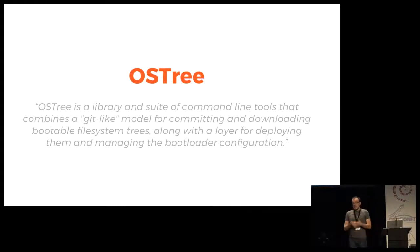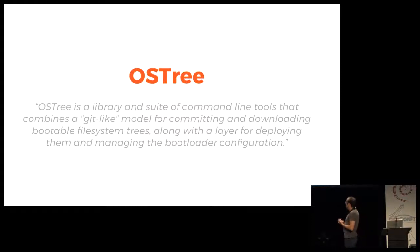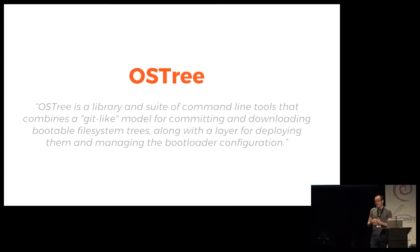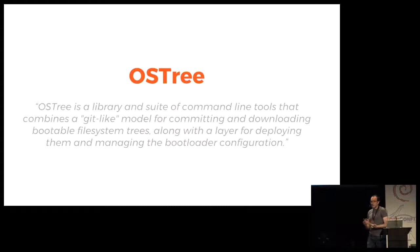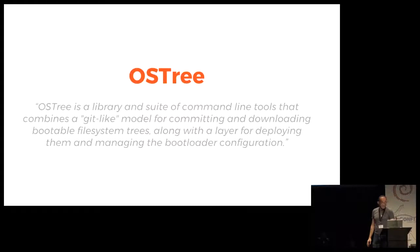What we chose instead is OSTree. It's effectively a Git-like model for binaries — I think that's the easiest way to describe it. You take a whole filesystem tree, big binary blobs, and you commit it to a repository. A repository can have many branches, many remotes, and things like that. Then you download those bits again on the client side, and this happens atomically — not a chance that it's partly Project Atomic, which is a Red Hat Fedora-based way of using this.